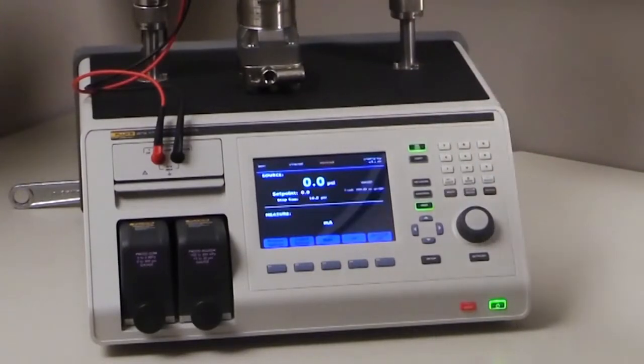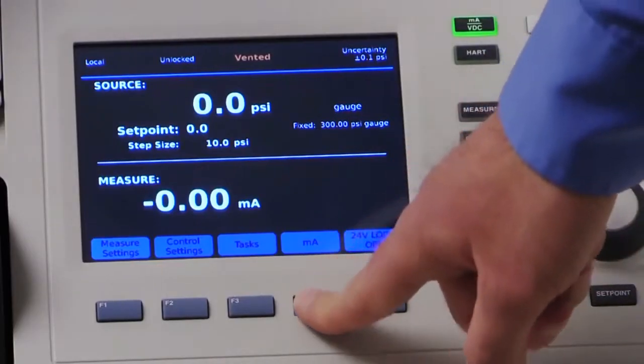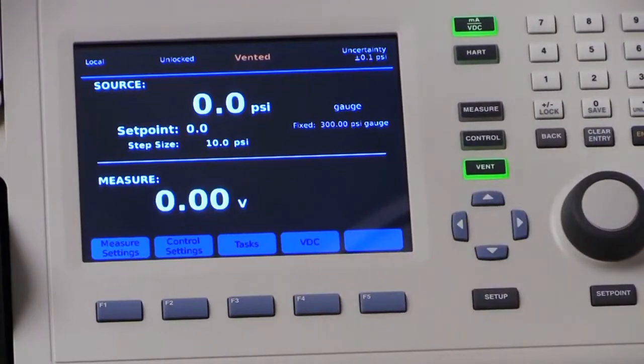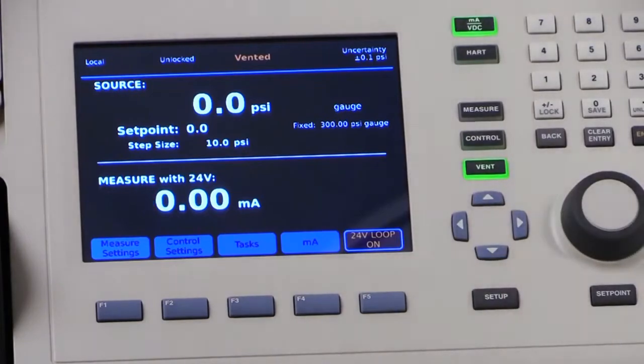To use the EMM, connect the device under test and press the mA VDC button. You can then select between measuring current and voltage, and also toggle the 24-volt loop power on and off.